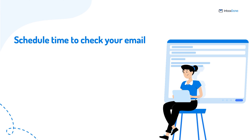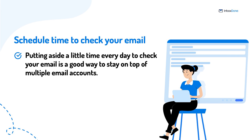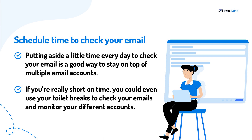Number five: schedule time to check your email. Putting aside a little time every day to check your email is a good way to stay on top of multiple email accounts. If you are really short on time, you could even use your toilet breaks to check your emails and monitor your different accounts. It is all about finding moments to quickly go through the clutter and prevent it from building up any further.